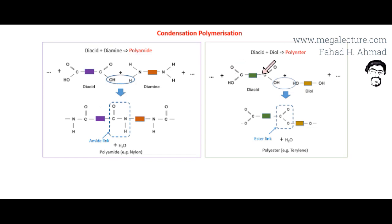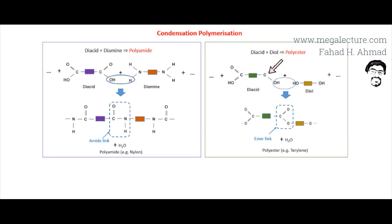The carboxylic acid groups and OH groups repeat along the chain. The H is lost from the alcohol, the OH is lost from the carboxylic acid, and this oxygen ends up joining with the carbon atom, resulting in the formation of an ester link. There are many ester links on both sides, and that results in the formation of polyester.